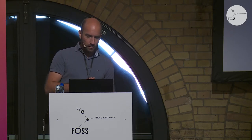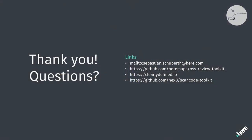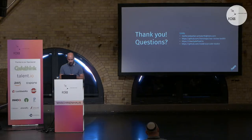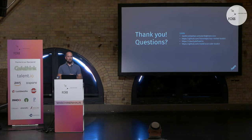That's about it for the tool — everything I wanted to say. In case you want to reach out, here is my email address. The slides will be shared later on. Our organization at GitHub is called HereMaps, where you can take a look at the OSS Review Toolkit. Links to the ClearlyDefined initiative and the ScanCode scanner are included. Thanks for listening — any questions?